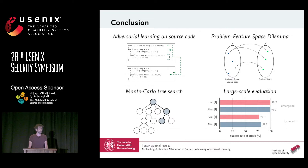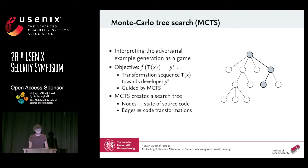Q: In the black box setting, how many queries do you make to the target model? A: We create sequences of transformations — we don't change the source code by one transformation and immediately query the model, but perform five or ten modifications first, then query it. Around 100 to 300 calls are necessary for an adversarial example.